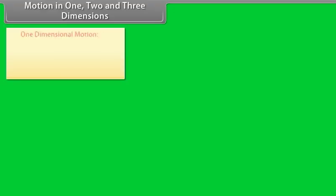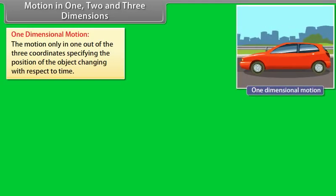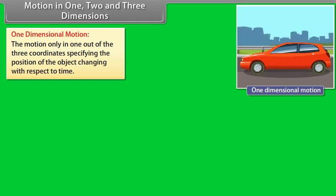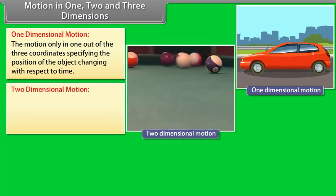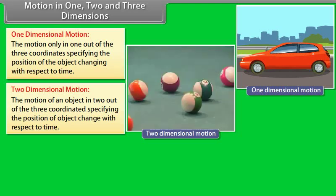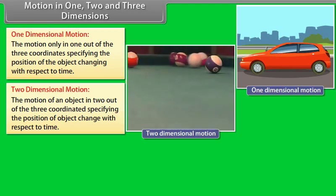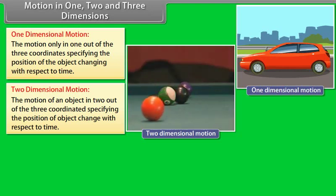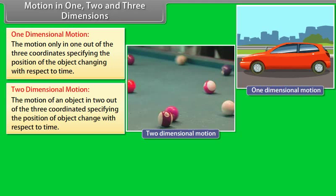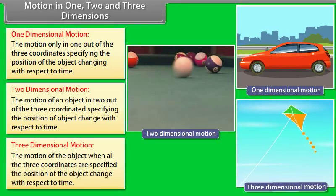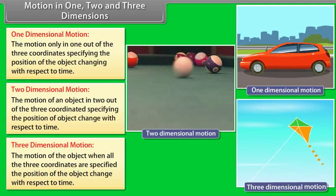Motion in one, two, and three dimensions: One-dimensional motion — motion in only one coordinate specifies the position of the object changing with respect to time; example: a car traveling in a straight line. Two-dimensional motion — motion where two coordinates specify the position; example: a billiard ball moving over a billiard table. Three-dimensional motion — all three coordinates specify the position; example: a kite flying on a windy day.